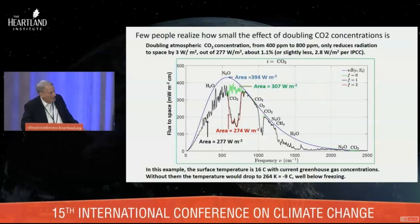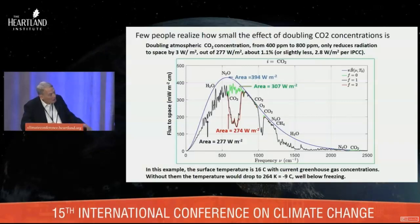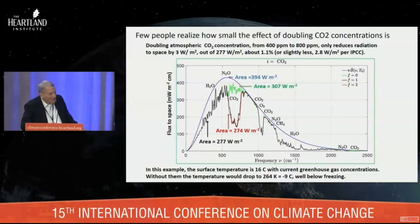The black curve is the radiation you would see coming out to space from satellites, and we have lots of measurements of this. You can see that the black curve is well below the blue curve. The total radiation going to space is the area under the jagged black curve, and it's substantially less than if you had no greenhouse gases, which is the blue curve.